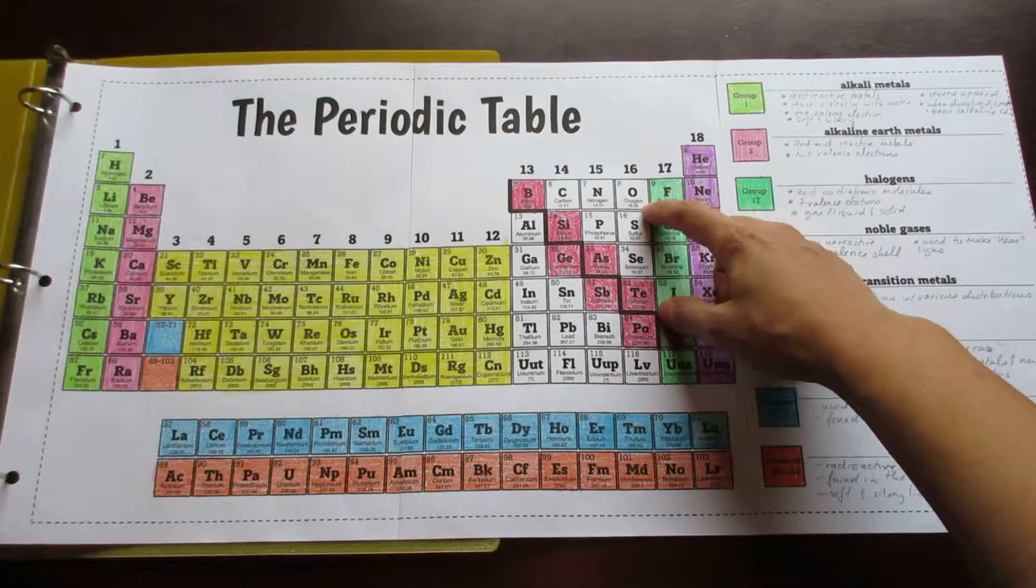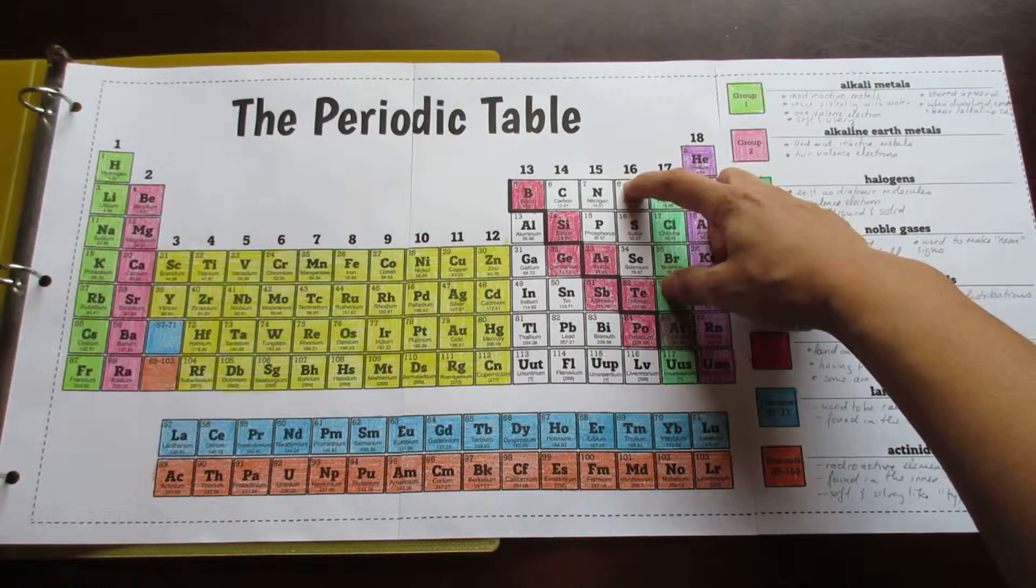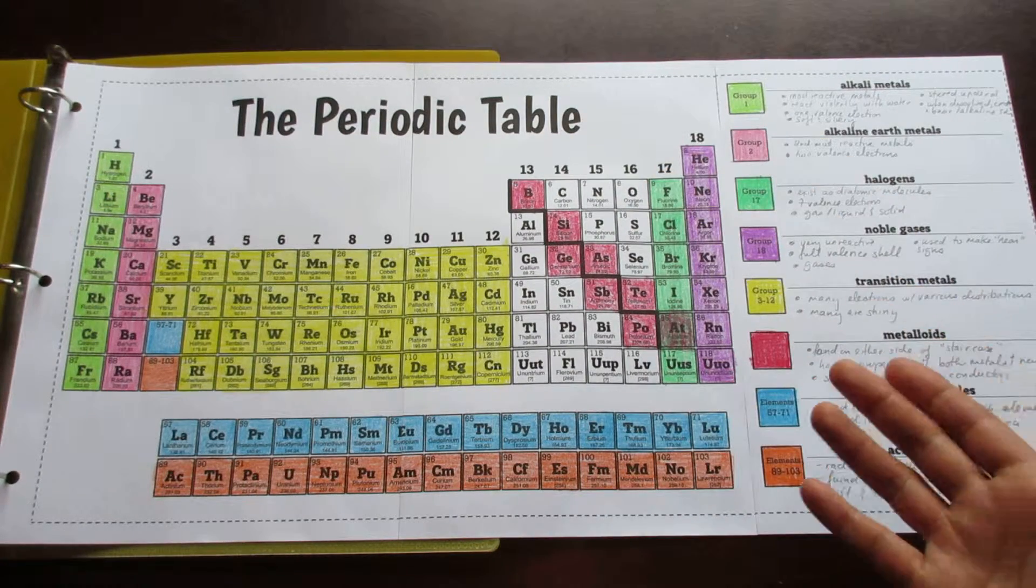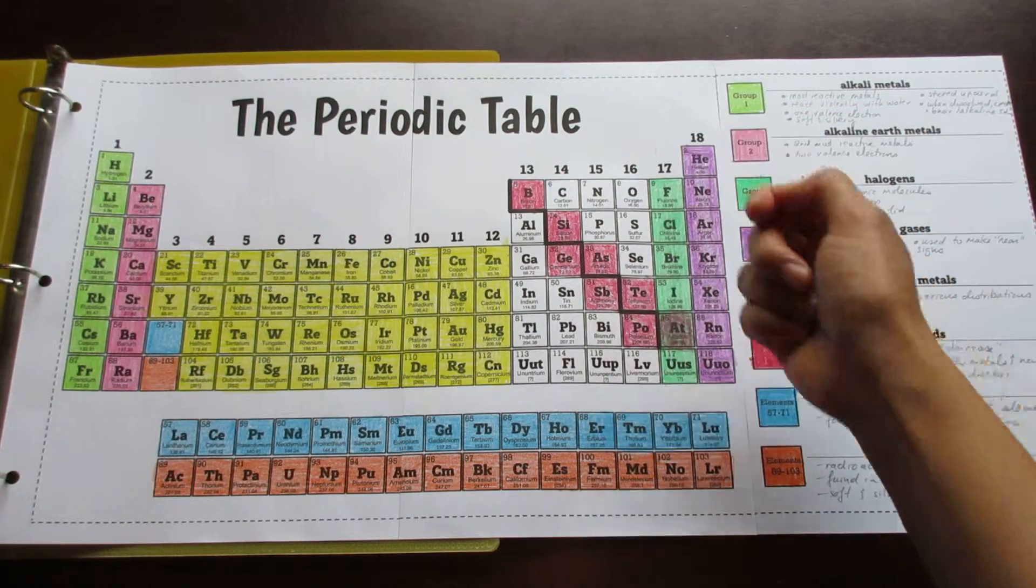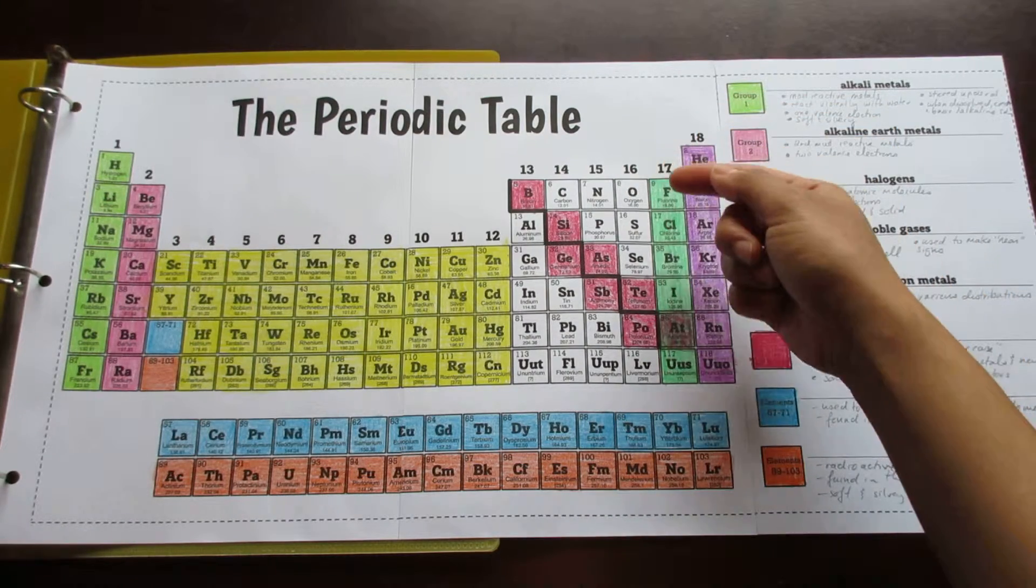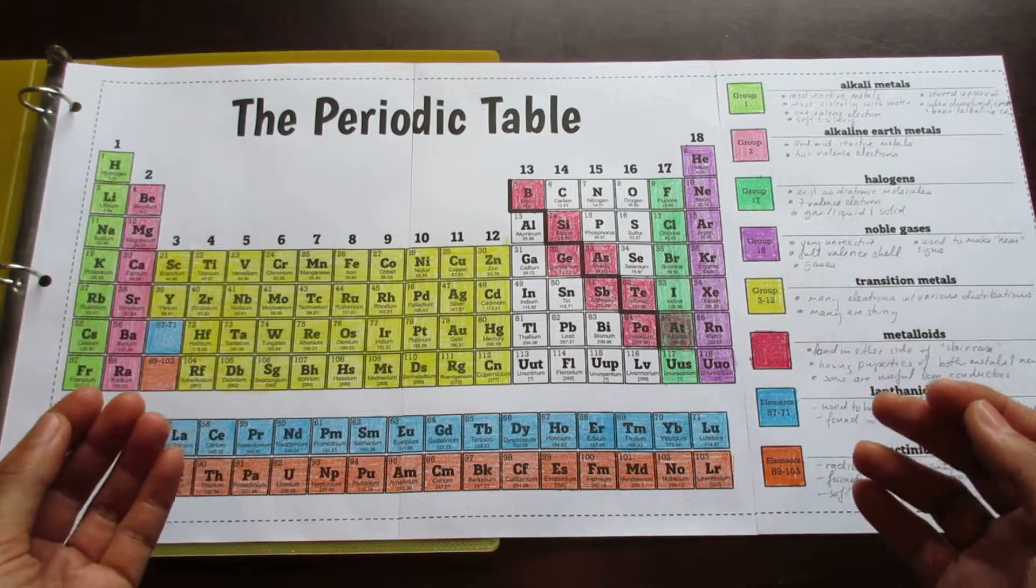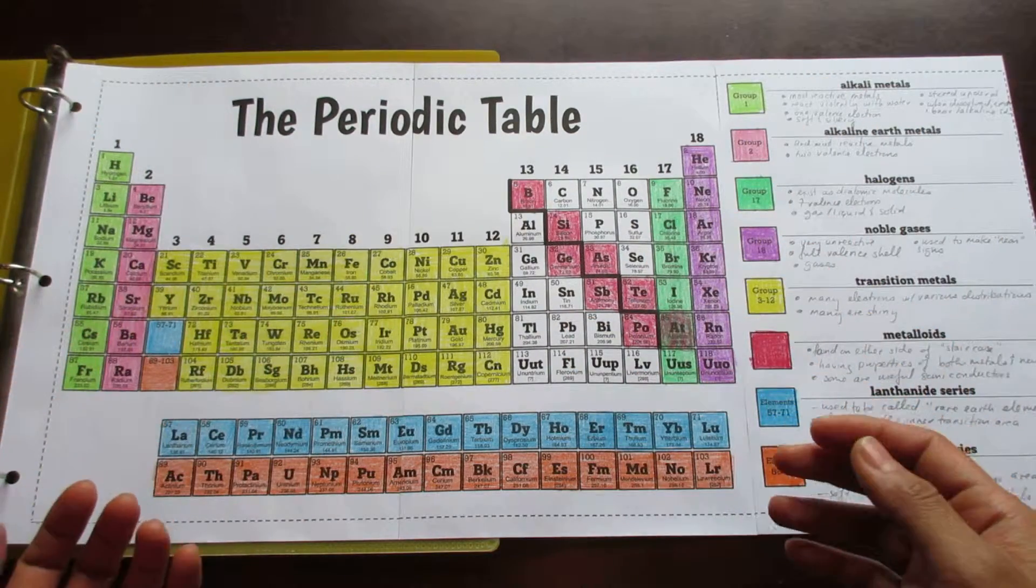For each element box, what you'll find is an atomic number, a symbol, a name, and the atomic mass. I've also provided options where there's only atomic number, or atomic number and symbol only, or I've even provided an empty grid if what you would like to do is have your students reproduce the entire periodic table.